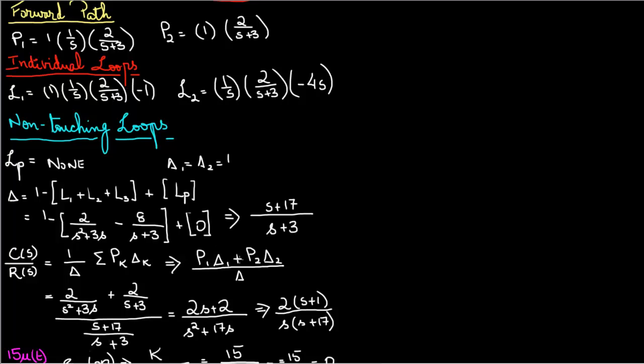So it's going to be p1 which is forward path 1 times delta 1 plus forward path 2 times delta 2 divided by the delta. And if you substitute the values that we found you would come up with 2 times s plus 1 divided by s times s plus 17.